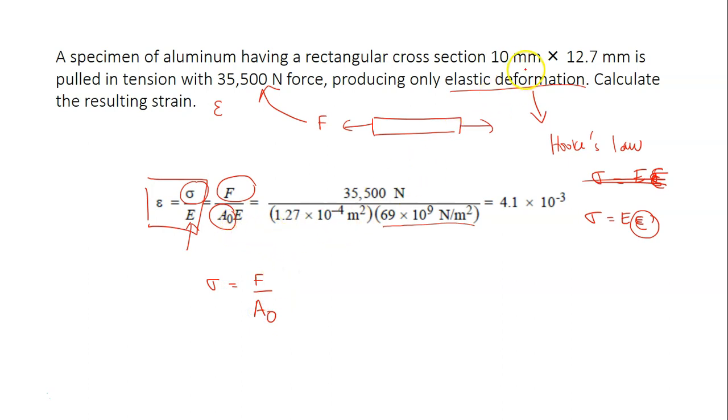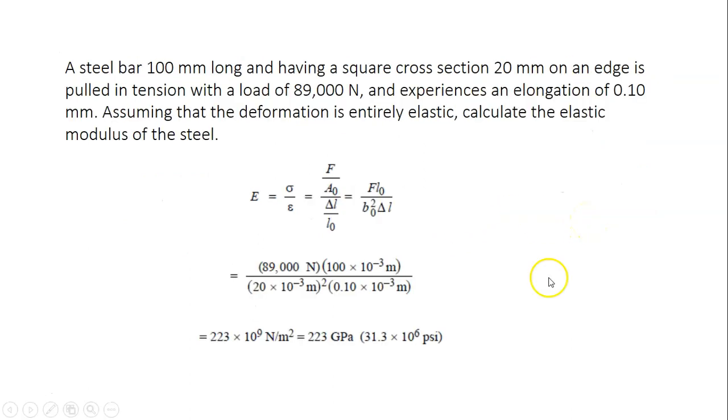So A₀ in this case is just 10 mm times 12.7 mm. So solving these numbers, you can work out what is the value for strain, which is 4.1 times 10 to minus 3.